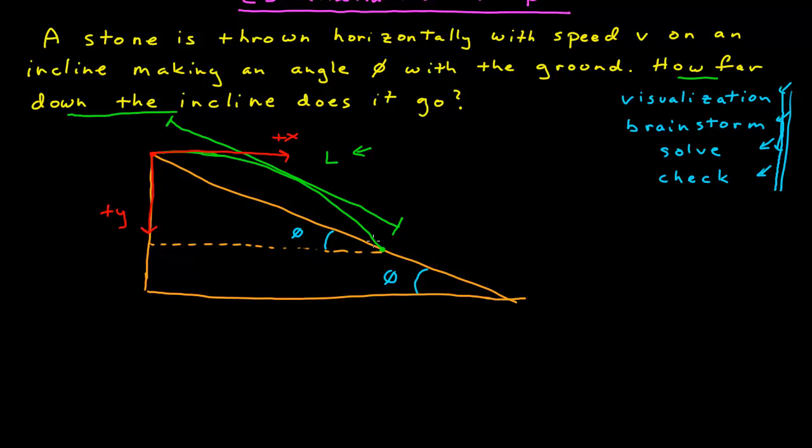It's going to travel some distance x and some distance y before it falls. For example, it's going to travel some distance x before it hits, and I know that x where it lands is going to be equal to L cosine phi. I also know that the y direction, since it's positive y, that it travels, is going to be L sine phi. So I can see already from my picture, I've got some relationships between what I'm trying to find, which is down the incline, versus the x and y distance that it travels.